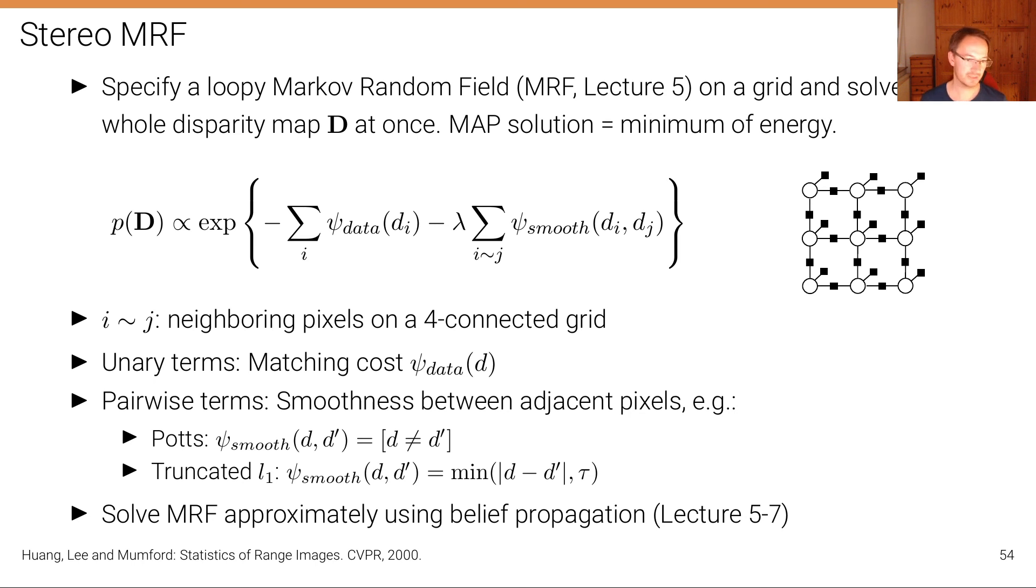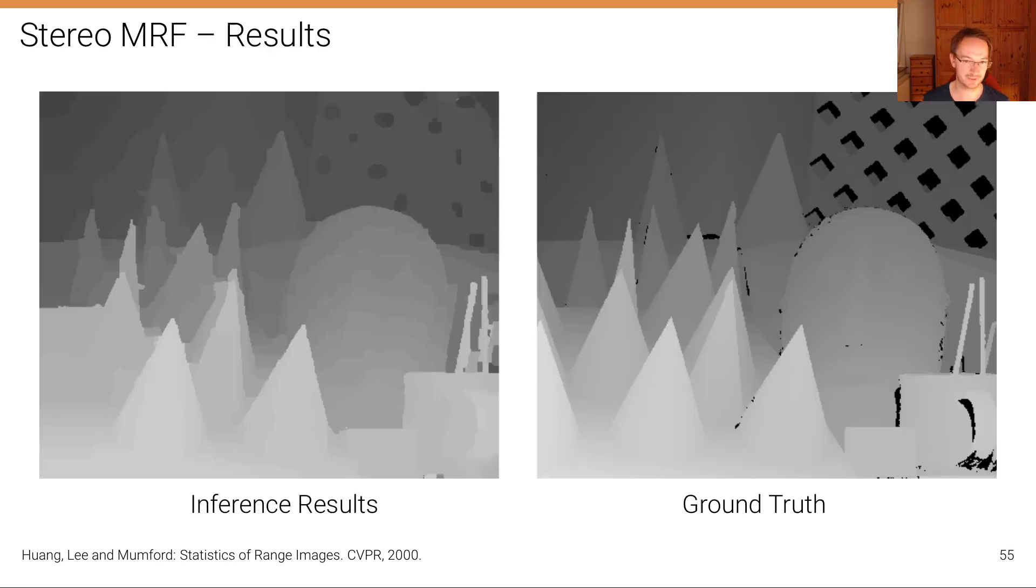And so for solving this MRF approximately, this is a difficult problem. We can only solve it approximately. There's a variety of techniques that can be used such as graph cuts or belief propagation. And in lecture five to seven, we'll in particular talk about the belief propagation algorithm. And so here's a result of this algorithm applied on the same image that we have seen before, the cones dataset from the Middlebury dataset. And you can see that now, despite where we're using a very simple, not even learned similarity metric, we obtain much better results, at least for this very simple scene here with a lot of texture and Lambertian surfaces.